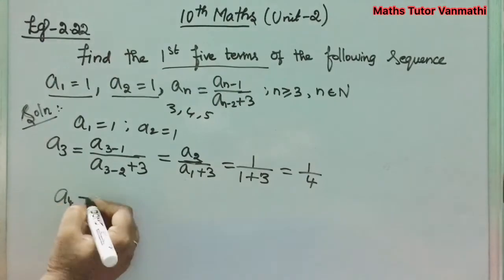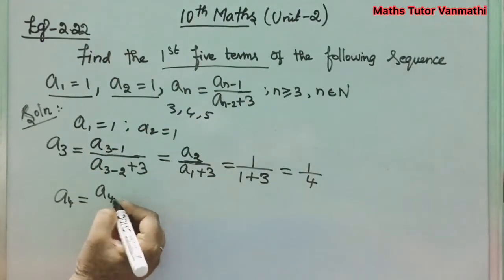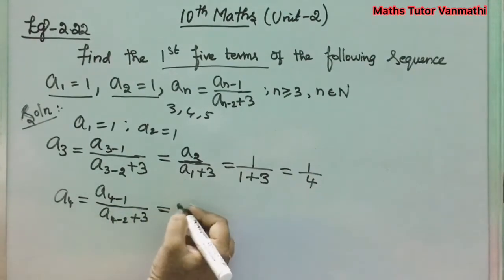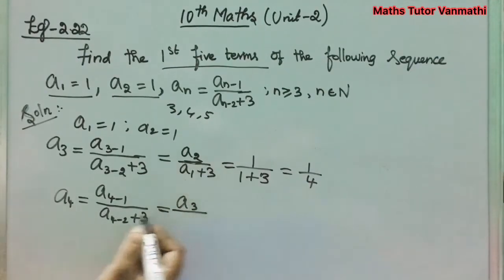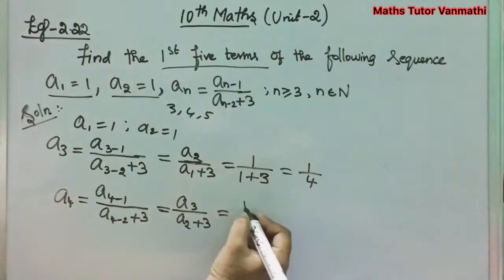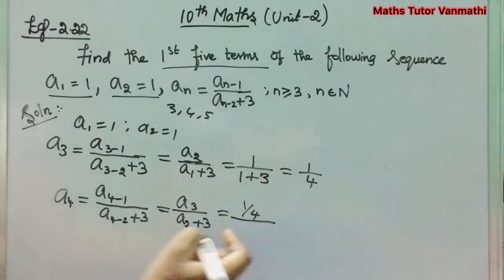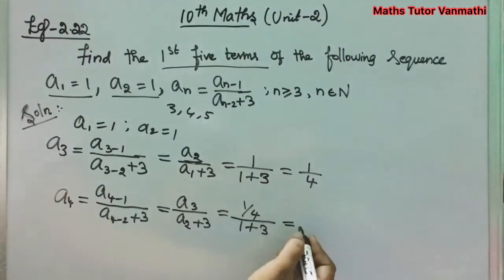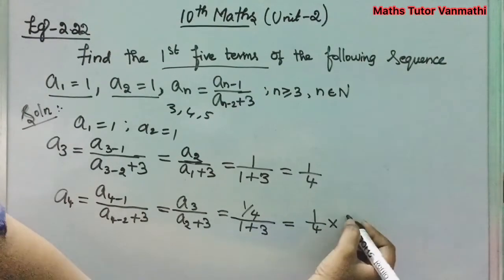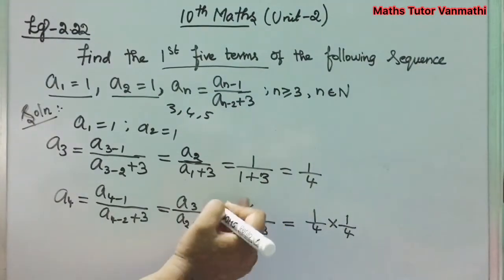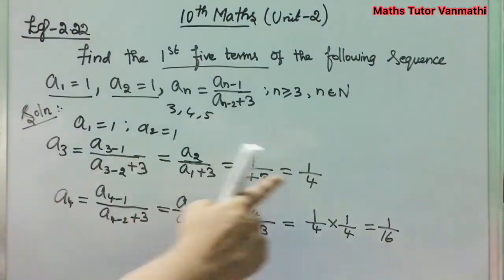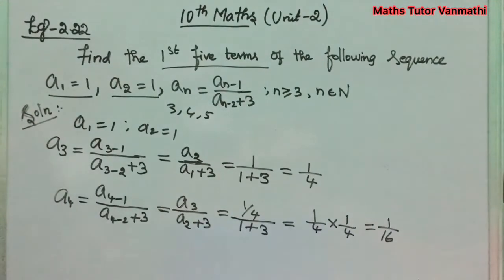Next, finding a_4: substituting n = 4, we get a_4 = a_3 / (a_2 + 3). a_3 = 1/4, a_2 = 1, so a_4 = (1/4) / (1 + 3) = (1/4) / 4 = 1/4 × 1/4 = 1/16. So a_3 = 1/4 and a_4 = 1/16.